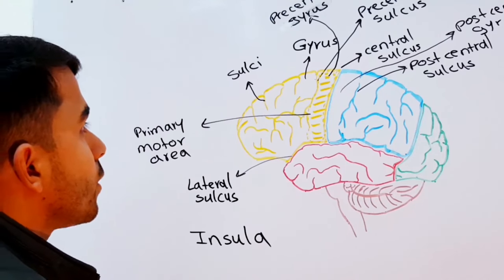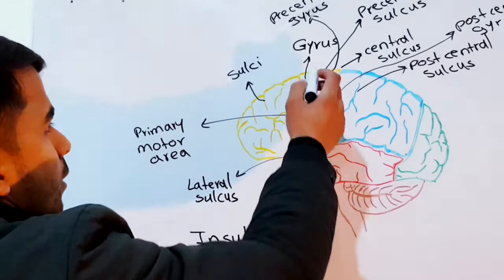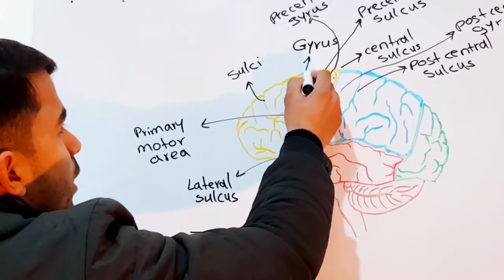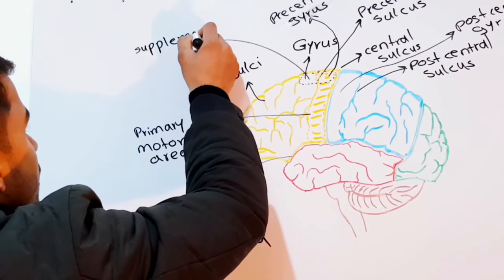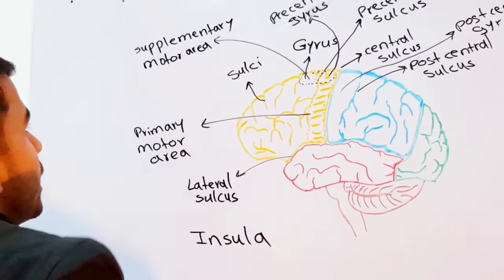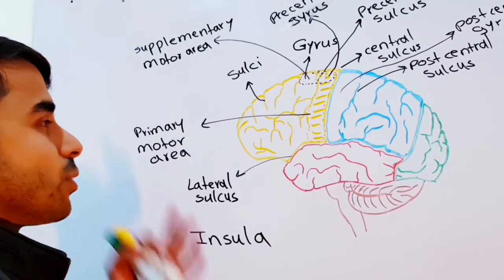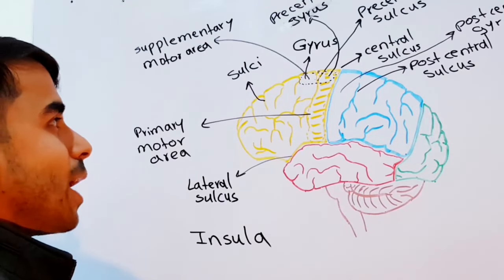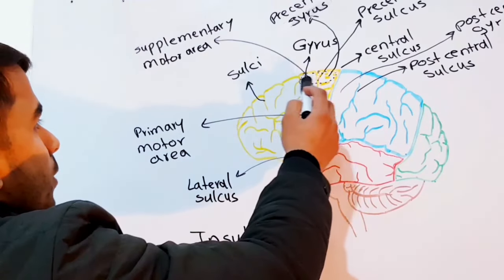There is another motor area called the supplementary motor area, located in this region here. The supplementary motor area is involved in complex movements of our body — it coordinates our complex movements — while the primary motor area allows us to consciously move our skeletal muscles.